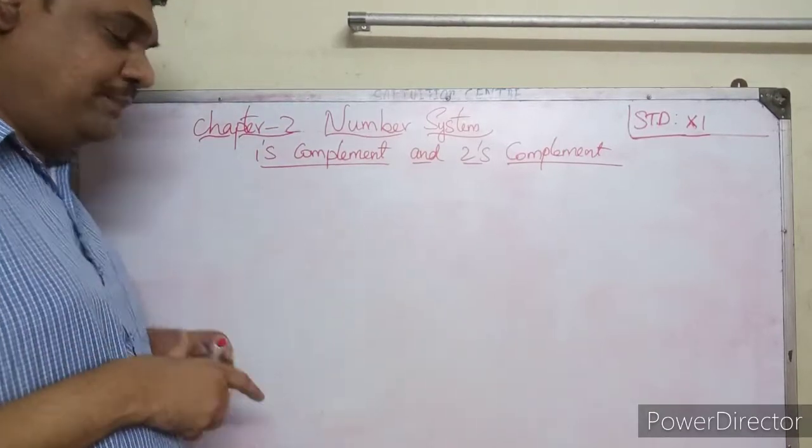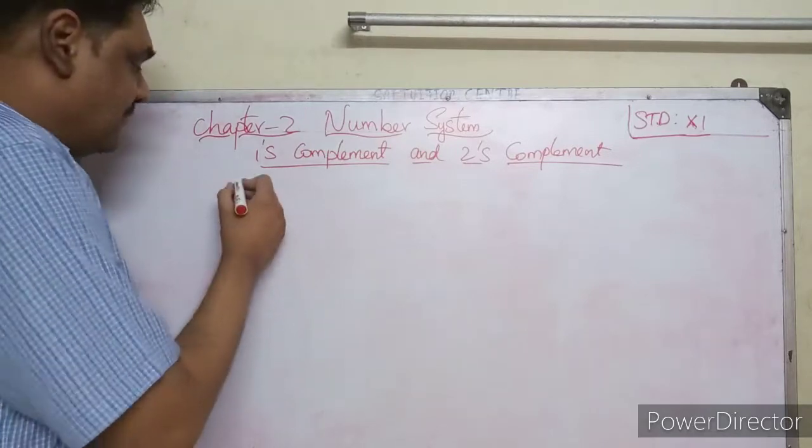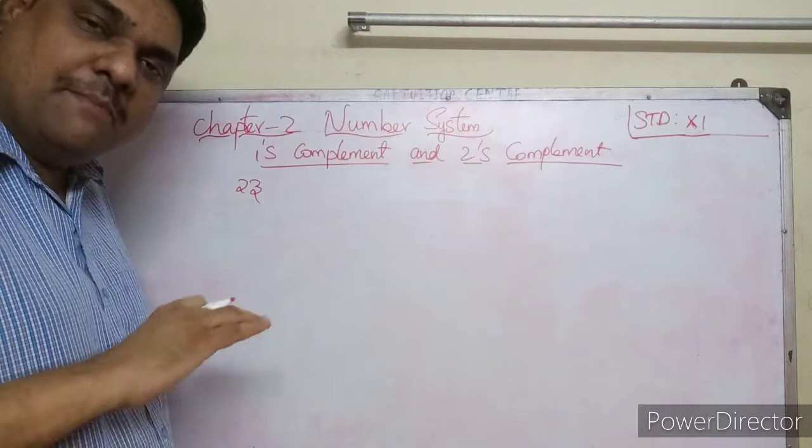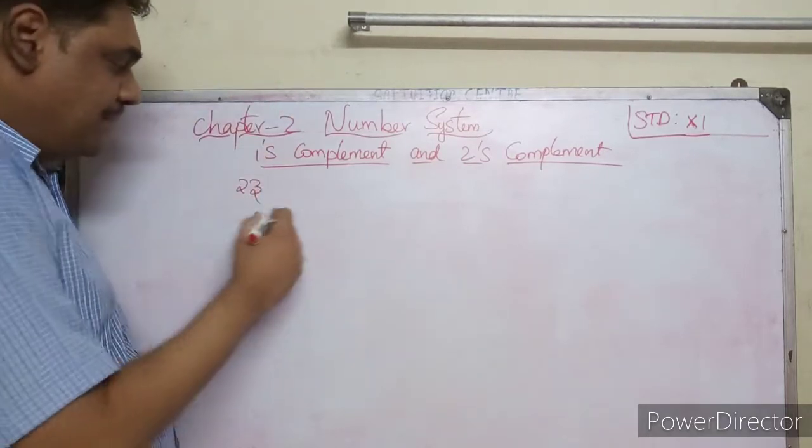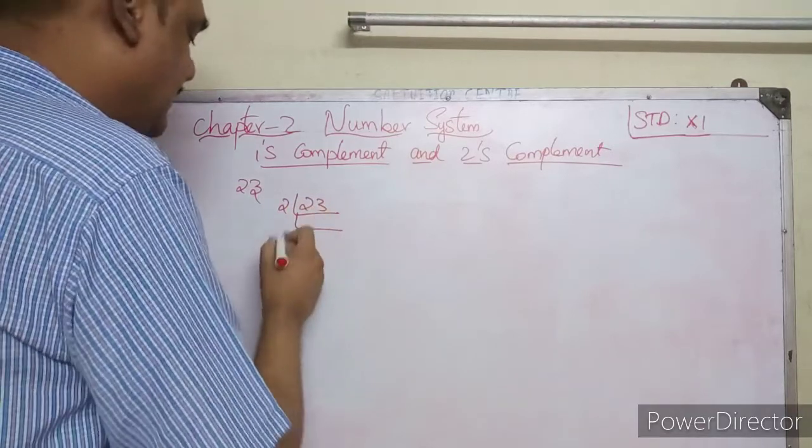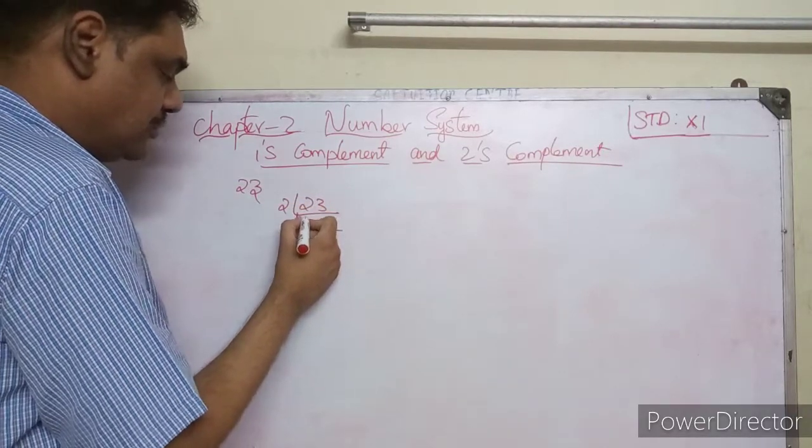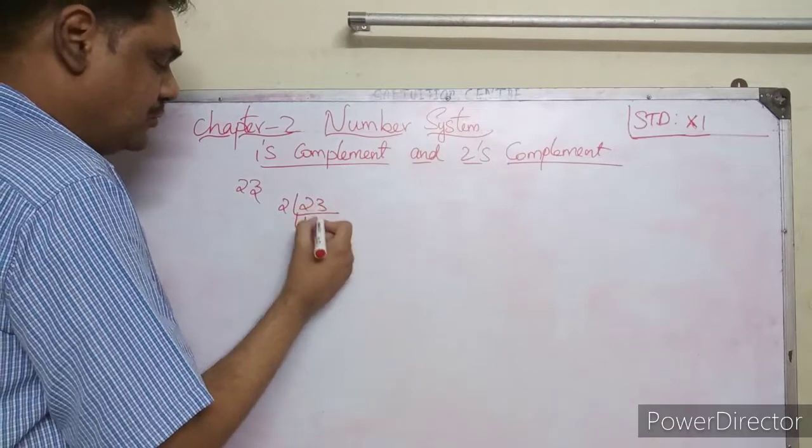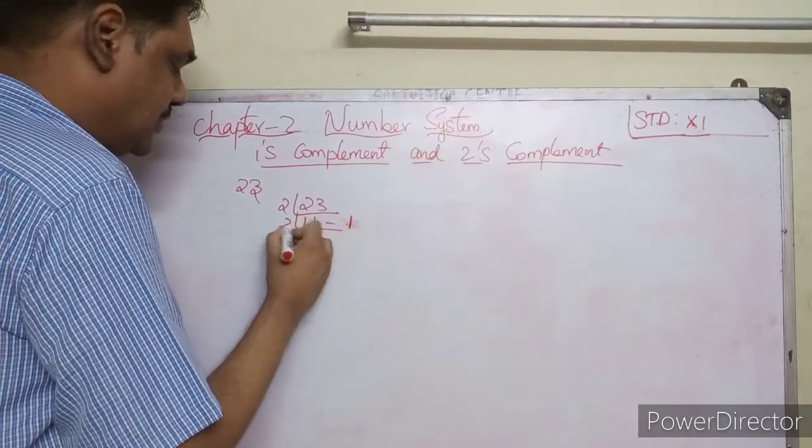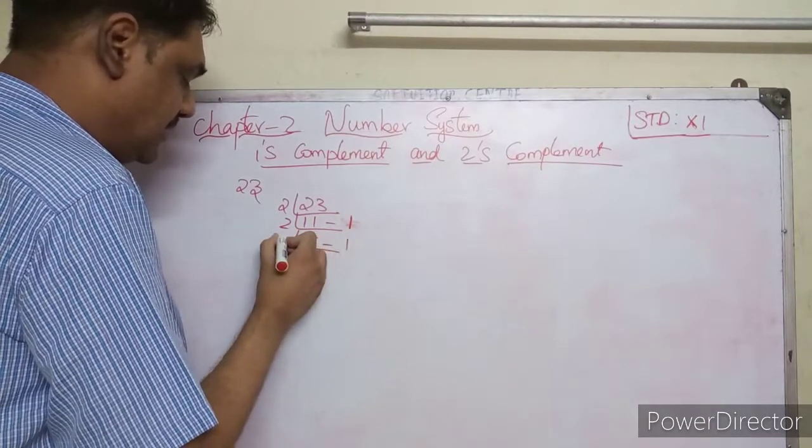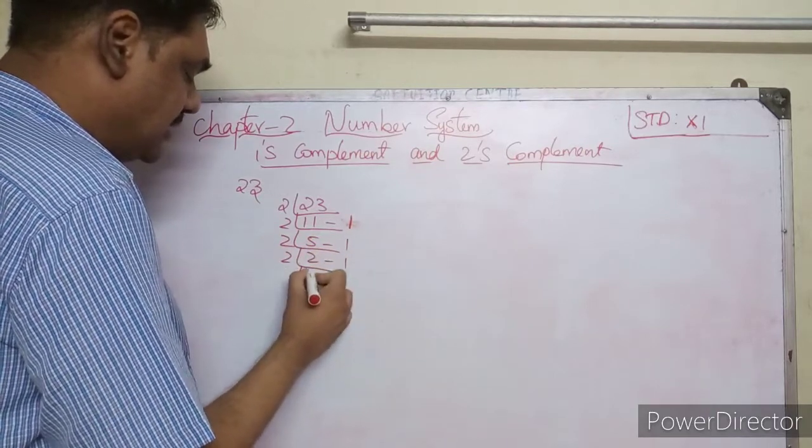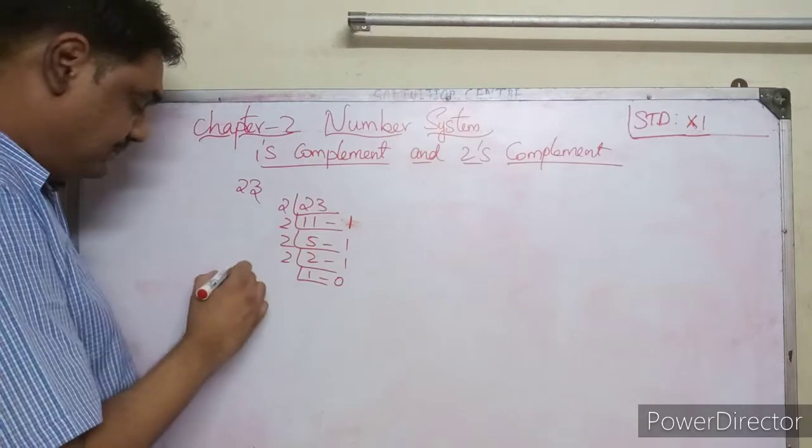For example, if you type 23 on the keyboard, the computer converts it to binary before storing it. So 23 base 10: divide by 2, 23 divided by 2 is 11 remainder 1; 11 divided by 2 is 5 remainder 1; 5 divided by 2 is 2 remainder 1; 2 divided by 2 is 1 remainder 0; 1 divided by 2 is 0 remainder 1.